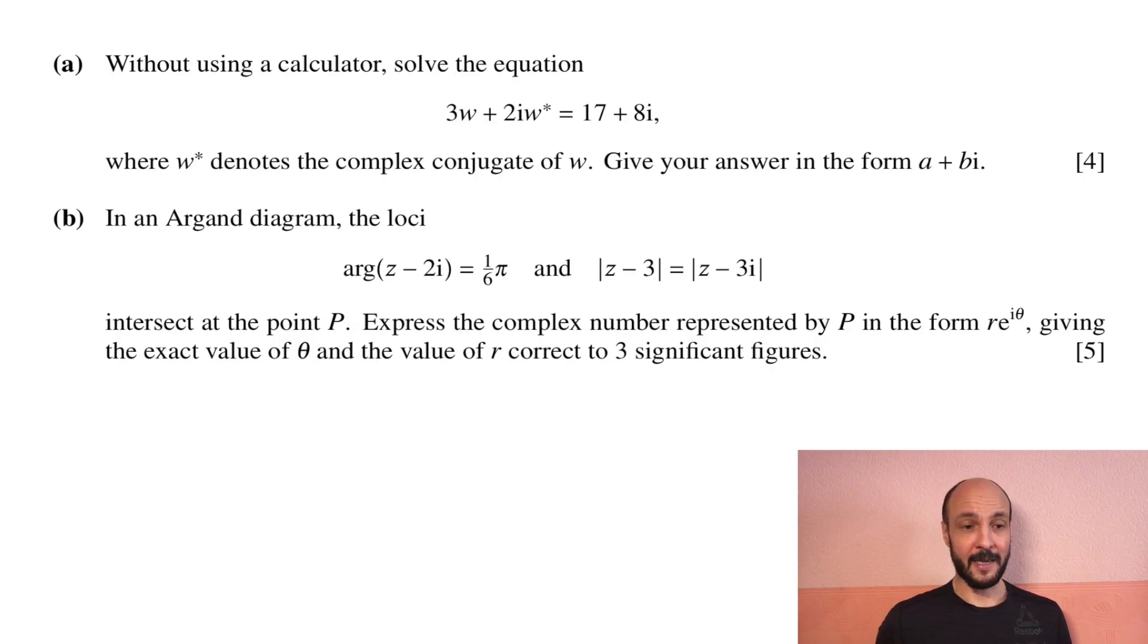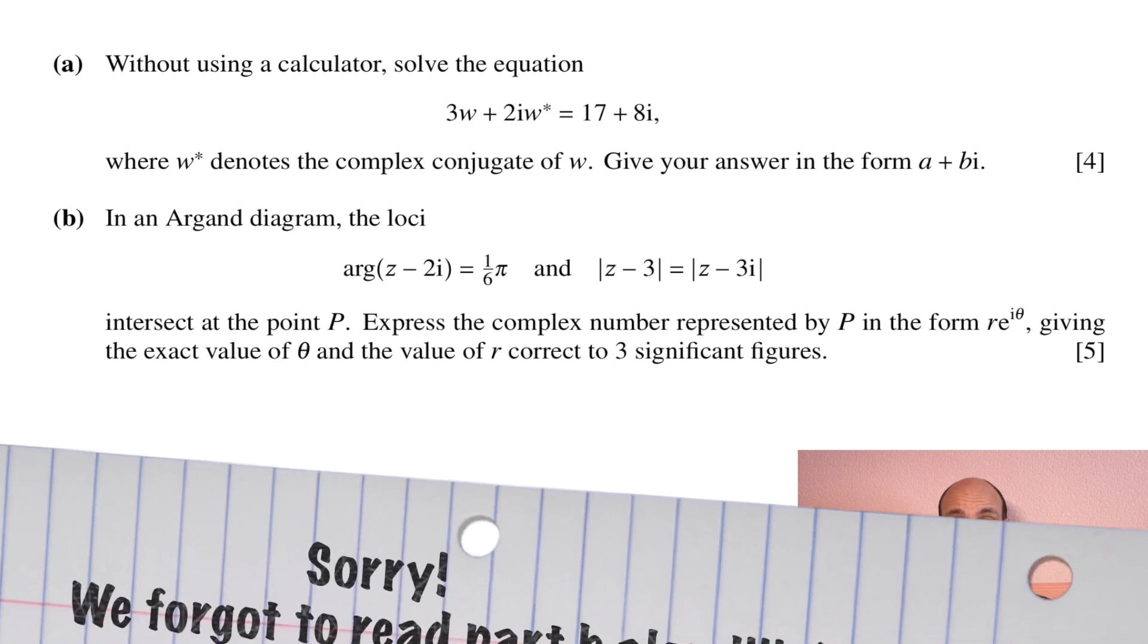Hello and welcome to MathsWithDavid.com. I'm David Swanson and today we're going to be looking at a complex numbers question on the Pure Mathematics 3 paper, that's the P3 paper of the Cambridge International A-Level. So we'll start by reading the question. Part A: Without using a calculator, solve the equation 3w plus 2iw star equals 17 plus 8i, where w star denotes the complex conjugate of w. Give your answer in the form a plus bi.